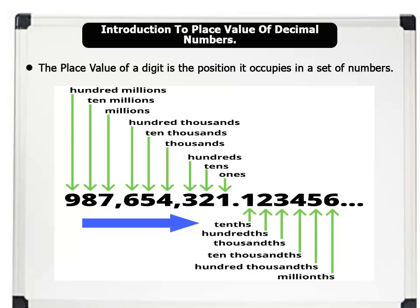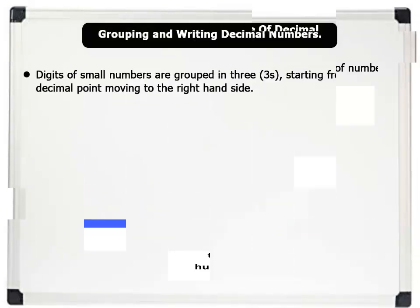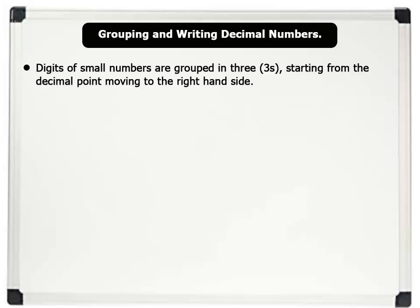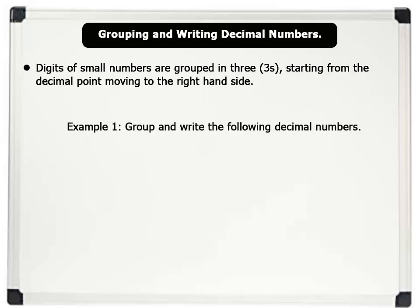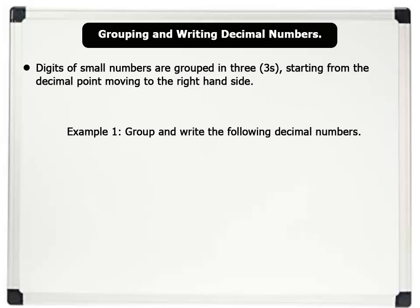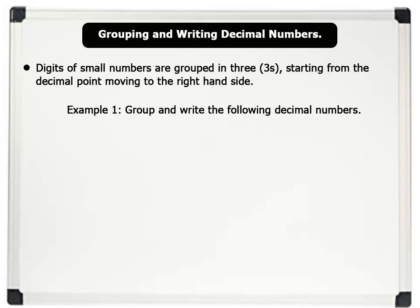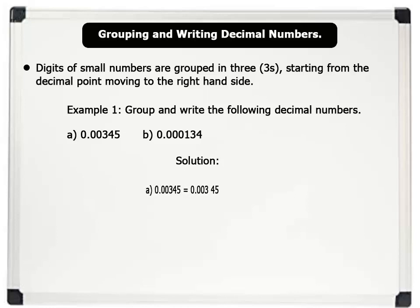Now, let us learn how to group and write decimal numbers. Digits of small numbers can be grouped in threes, starting from the decimal point and moving to the right-hand side. For example, let us group and write the following decimal numbers in words: A. 0.00345. B. 0.000134. Solution. A. First, we group the digits in threes, starting after the decimal point, as shown on the board.